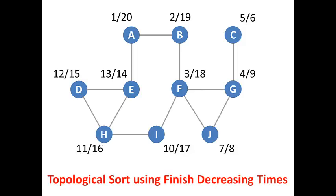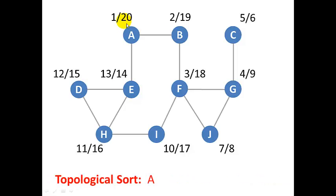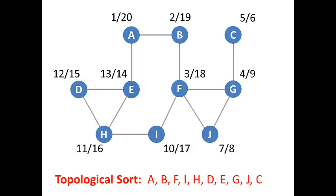We can also do a topological sort by sorting the vertices in order of decreasing finish times. We look at the highest finish time first, which is vertex A with 20. The next highest is vertex B with 19, followed by vertex F with 18, vertex I with 17, vertex H, vertex D, E, G, J, and C. It's that simple to produce a topological sort after finishing the depth-first search — we simply sort the vertices by decreasing finish times.